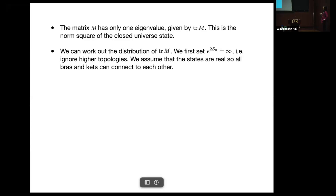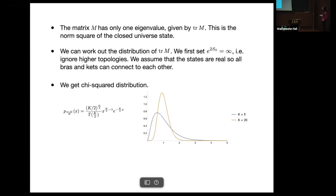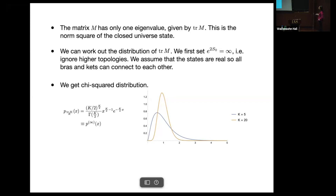We try to work out the distribution of this norm squared. We first set the topological term aside, and assume the states are real so bras and kets are connected. What we get is a chi-squared distribution of trace(M)/K — the larger the number of flavors K, the sharper the distribution is peaked around one. We call this distribution P_∞, as it will show up later. The distribution is over different alpha sectors, and each alpha sector has one closed universe state with a certain value of norm.